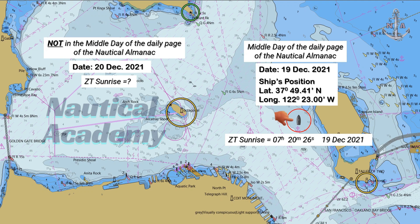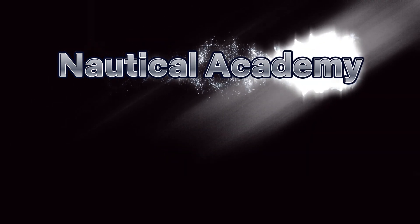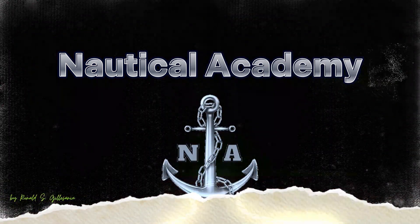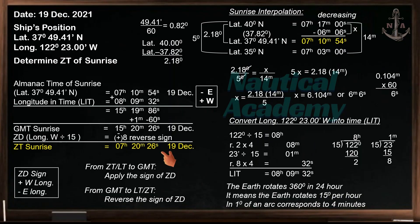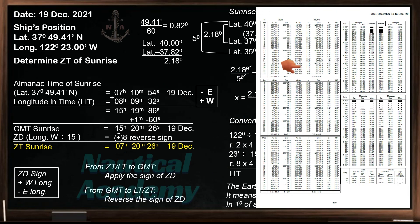The ship remains at the same Anchorage Area with the same position. This is what we obtained in my previous video when we calculated the zone time of sunrise. If you are new to this channel and you want to know the full details of this video, kindly check the link in the description below. Before we proceed, let's first take a look at the daily page of our Nautical Almanac.